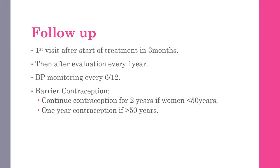For follow-up: the first visit is three months after starting treatment, then every one year after evaluation. At every visit, or at least every six months, check blood pressure for development of hypertension. Advise barrier contraception: continue for two years if the woman is less than 50, and at least one year if she is more than 50 years old.